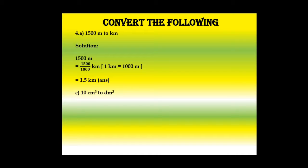Now look at question number C: 10 cubic centimeters to cubic decimeters. Here also we have to know the relation between cubic decimeter and cubic centimeter. We already know that one cubic decimeter is equal to 1000 cubic centimeters. When converting from a smaller to a bigger unit, we have to use sub-multiples, meaning we have to divide.